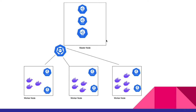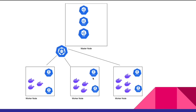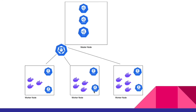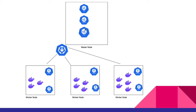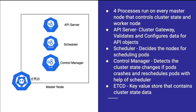We have different kinds of processes running within these nodes. If you see this diagram, we can see this box we are calling the master node, and then it has different processes running within it. We have separate boxes we are calling worker nodes with different processes running within them. Any kind of machine we can create and install these processes — those processes generally decide whether it's a master node or a worker node.